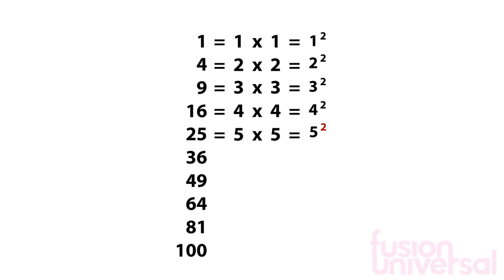We can write square numbers in a different way, using indices or powers. 1 times 1 is written 1 squared or 1 to the power 2. A 2 is used because there are two 1s multiplied together. We can repeat this all the way down to 10 squared.